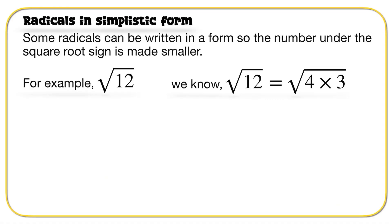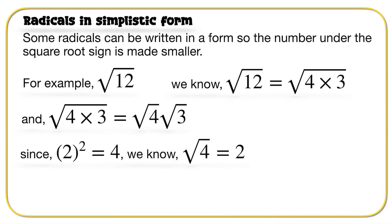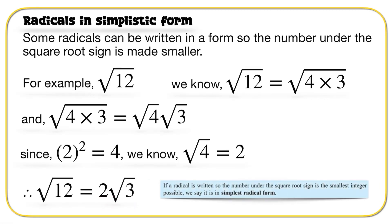Let's look at radicals in simplest form. Some radicals can be written so that the number under the square root sign is made smaller. For example, root 12 can be written as root 4 times 3, then root 4 times root 3. Since root 4 equals 2, we end up getting 2 root 3. If a radical is written so the number under the square root is the smallest integer possible, we say it is in simplest radical form.